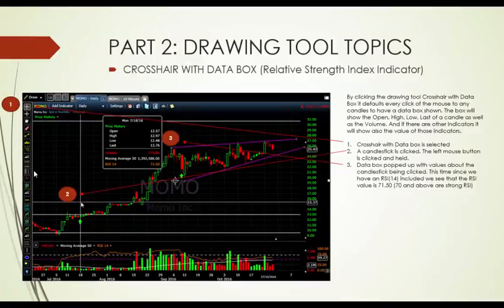Now we have crosshair with data box, but this time combining it with an indicator called Relative Strength Index (RSI). This particular indicator tells you whether a stock still has the strength to continue moving up, or whether it has been overbought or oversold. When it's very low — less than 50 — it's oversold. If it's around 70 and upward, it's overbought.